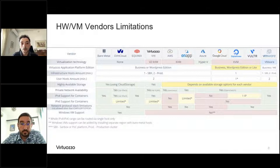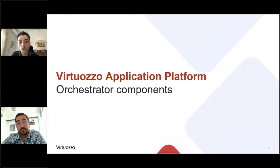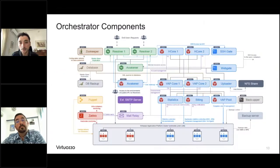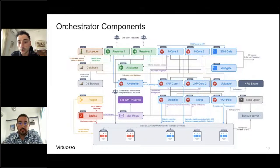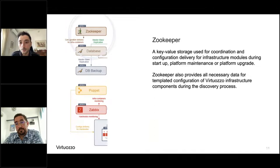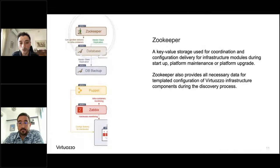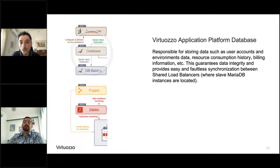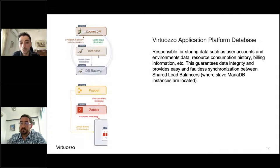Let's go deeper into the infrastructure components and how it works behind the scenes. On this slide we can see the overall architecture and the components of the orchestrator, and now we will go deeper to see each individual one. The Zookeeper is responsible for coordinating and configuring the delivery of the infrastructure modules during platform maintenance and upgrades from our engineers. The database has built-in redundancy for high availability and is responsible for storing system information such as user environments, billing history, consumption history, and more.